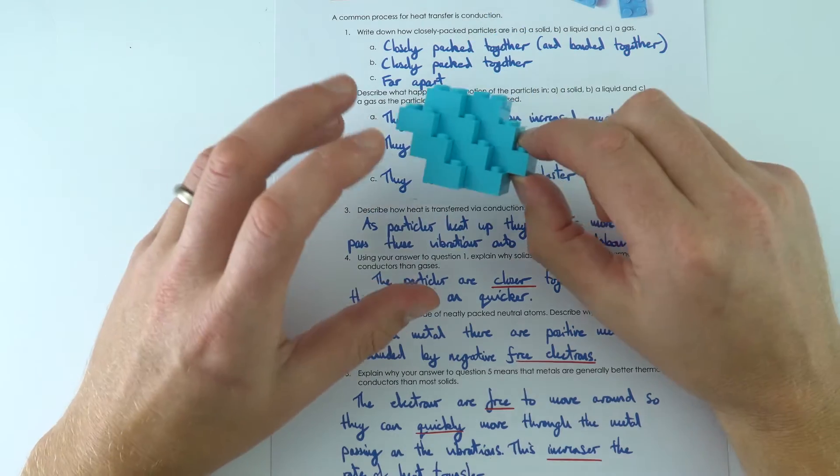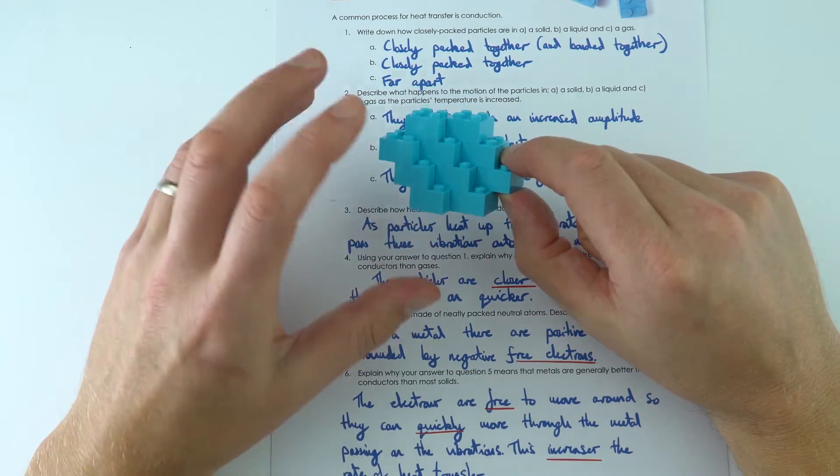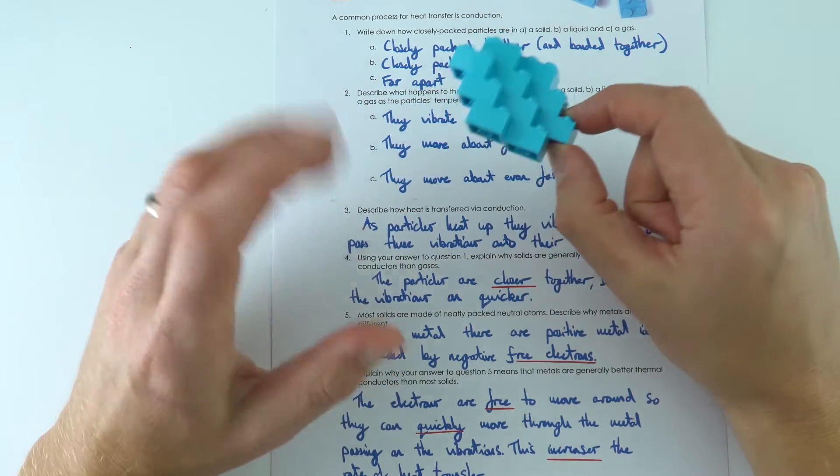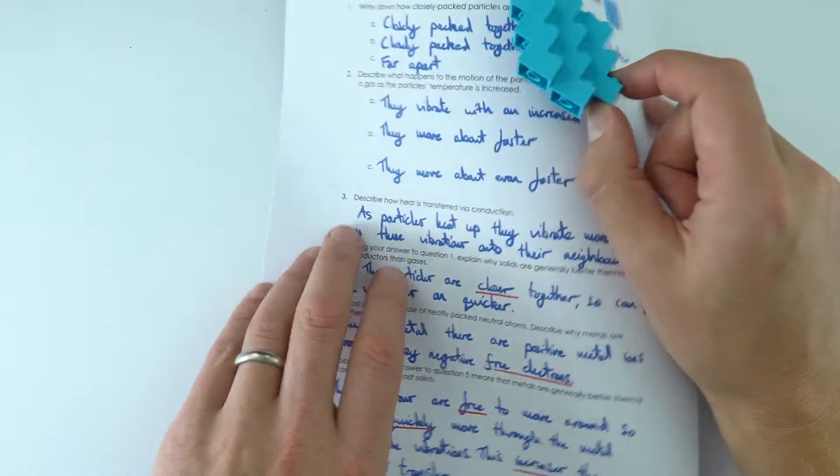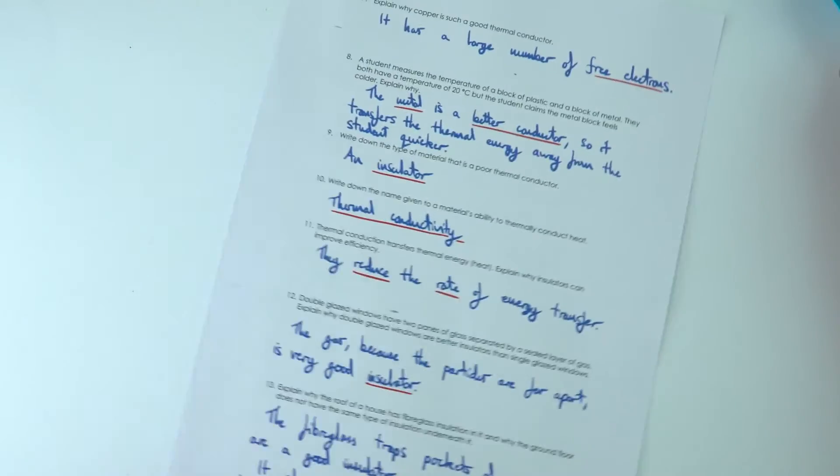And that's why metals are really good thermal conductors, and also actually often electrical conductors as well, and it's due to these free electrons which are free to move around inside.